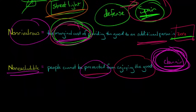Now there's an issue with public goods is that they tend to be undersupplied. And the reason that they're undersupplied or not supplied at all in some cases is because of something known as the free rider problem.